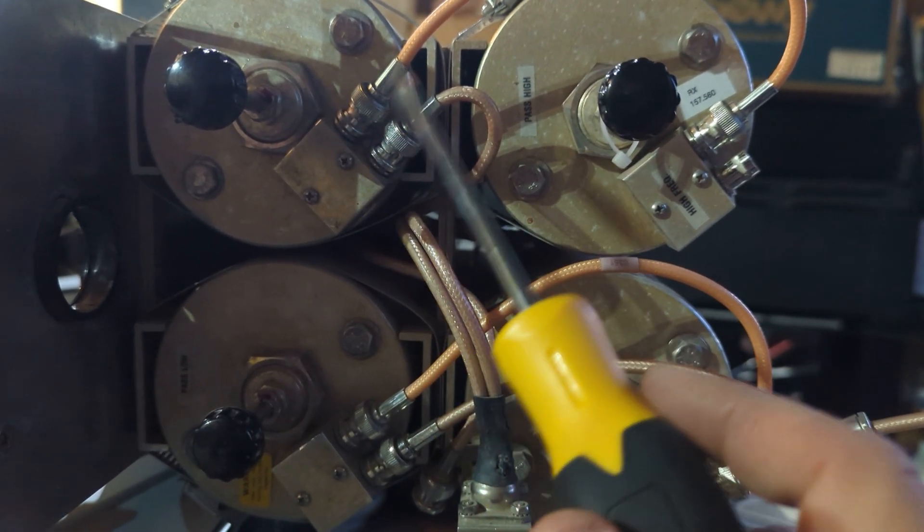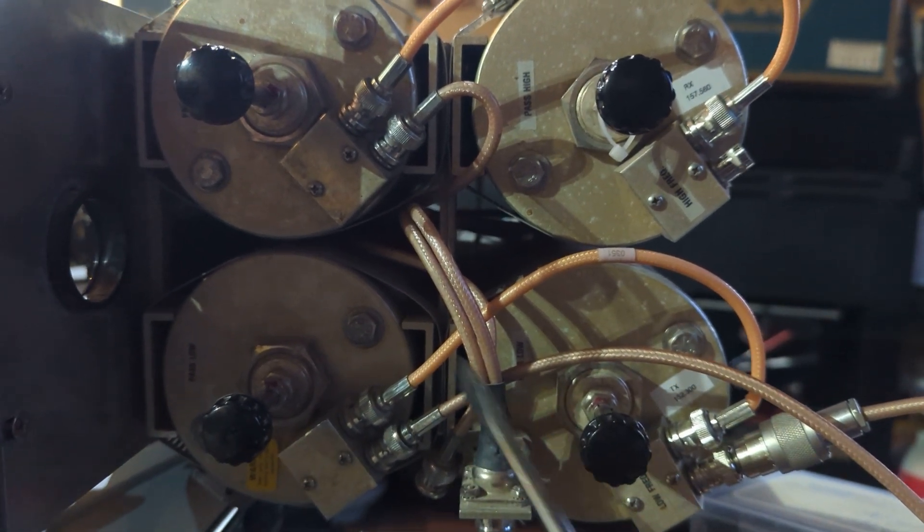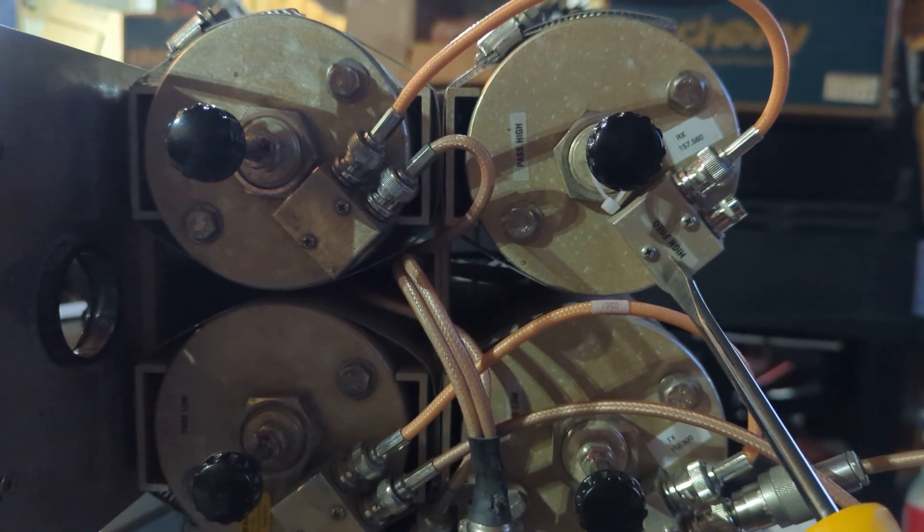What that does is it says, okay, 152300, don't go this route, too much resistance, go this route here. Now, if you notice on each of the cans, it has a notch filter.